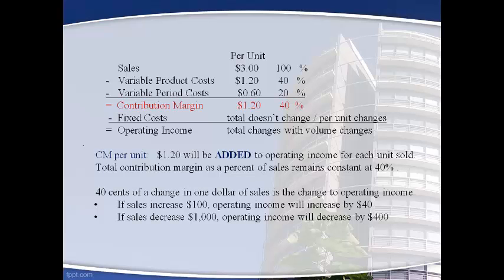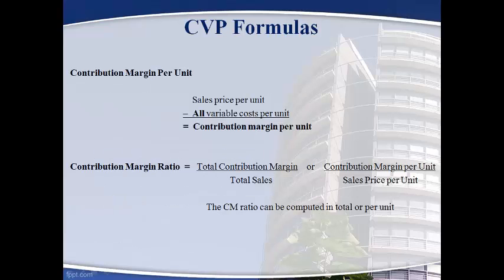The contribution margin of $1.20 per unit and the ratio of 40% will not change. If sales increase $100, $40 will be added to operating income. If sales decrease by $1,000, operating income will decrease by $400. Each unit sold will add $1.20 to profits. Total fixed costs do not change; fixed costs per unit will change with volume, and as such, a per unit fixed cost is never used. The contribution margin per unit and the contribution margin ratio will not change when units sold changes, and they are used in the formulas for cost-volume profit analysis.